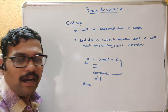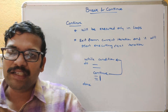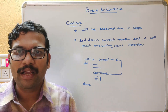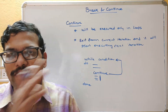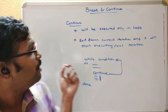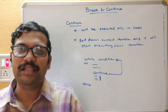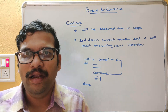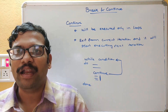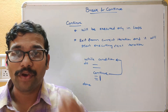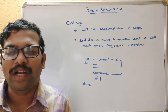So the key difference between break and continue: irrespective of the condition, if the control executes break it will exit from the loop entirely, whereas with continue it doesn't exit from the loop but skips the current iteration and moves to the next iteration. Let's execute a small program demonstrating both.